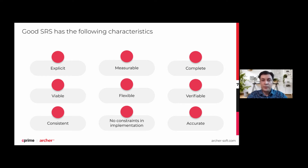Verifiable: everyone on the development team should have access to the document so they can reference it as frequently as necessary. Requirements need to be precise so that team members do not have to ask for more details — they should be available in the SRS document. Consistent: the requirements should fit each other; one section of your requirement document should not conflict with another. The document should be formatted consistently and use the same terminology throughout. No implementation constraints: an SRS document should be detailed enough to finish the job, but shouldn't be overly specific, because that might restrict development or introduce unnecessary risks. A lot of development depends on third-party services that developers have no control over.